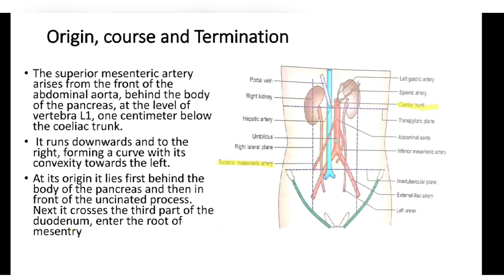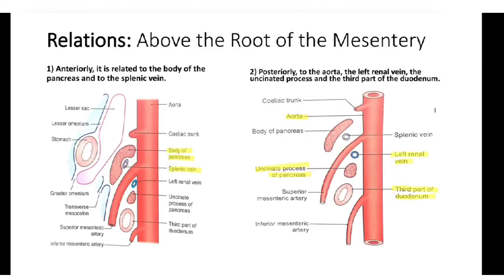At its origin, it lies first behind the body of the pancreas, and then in front of the uncinate process. Next, it crosses the third part of the duodenum and enters the root of the mesentery. The superior mesenteric artery arises from the front of the abdominal aorta behind the body of the pancreas at the level of vertebra L1, and runs downward and to the right.